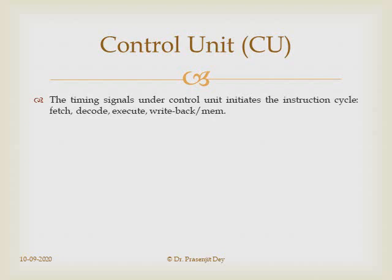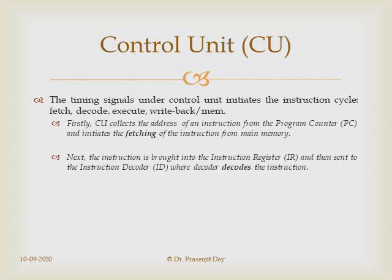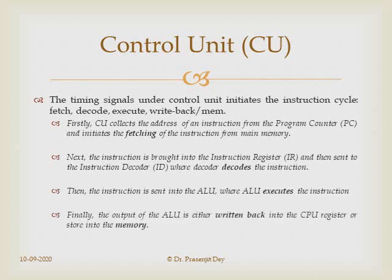Let us explain the instruction cycle step by step. First, the control unit collects the address of an instruction from the program counter and initiates the fetching of the instruction from main memory. After that, the instruction is brought into the instruction register and then sent to the instruction decoder, where the decoder decodes the instruction. Then the instruction is sent to the ALU where the ALU executes it. Finally, the output of the ALU is either written back into the CPU register or stored into memory.